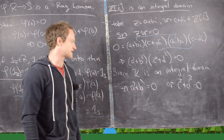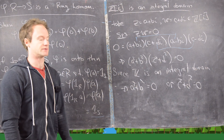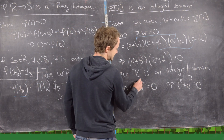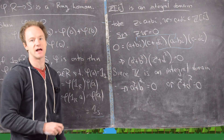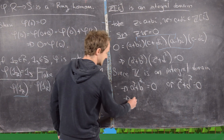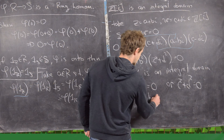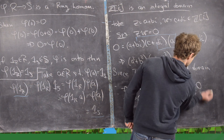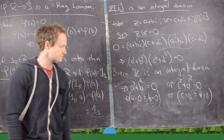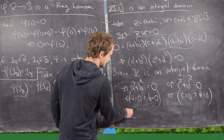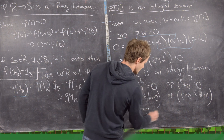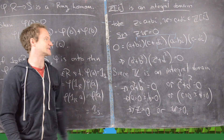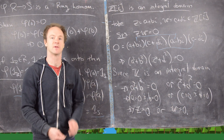Since a squared plus b squared is always greater than or equal to 0, the only way it equals 0 is if both a and b are 0, and similarly for c and d. So either a equals 0 and b equals 0, meaning z equals 0, or c equals 0 and d equals 0, meaning w equals 0. That is exactly the condition needed for Z[i] to be an integral domain.